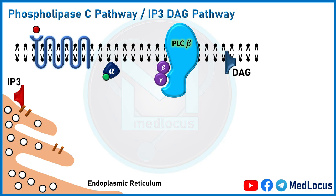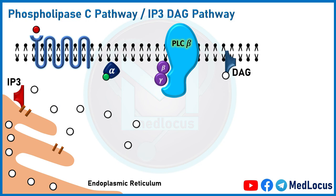DAG is embedded in the membrane, while IP3 is released into the cytosol. Both IP3 and DAG act as second messengers. The IP3 receptor, which is a calcium channel, is located on the membrane of the endoplasmic reticulum. IP3 binds with this receptor and causes release of calcium ions into the cytoplasm. The main goal of IP3 is to increase cytosolic calcium ion concentration.